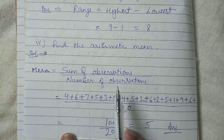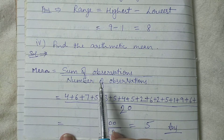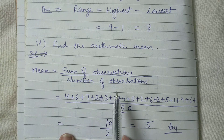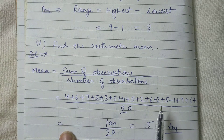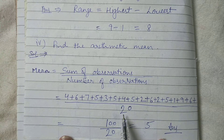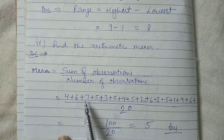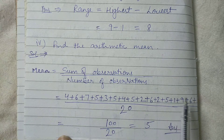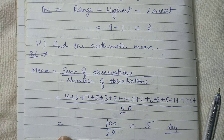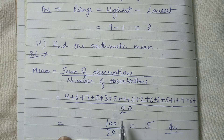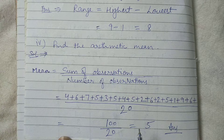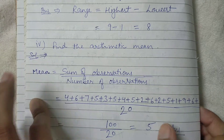Find the arithmetic mean. The formula of arithmetic mean is sum of observations divided by number of observations. You have to add all the marks given in the question and divide by the total count. There are total twenty observations. When you add all of them you get one hundred. So one hundred divided by twenty equals five. Five is the arithmetic mean — five is the average.